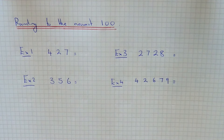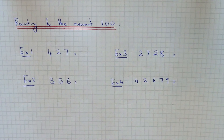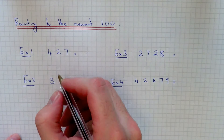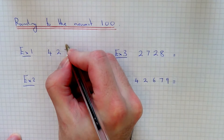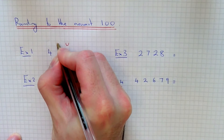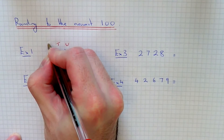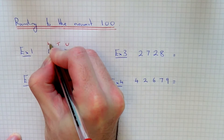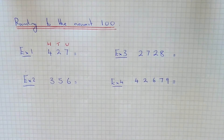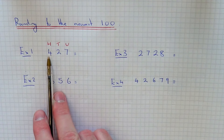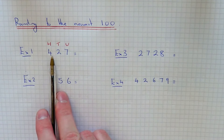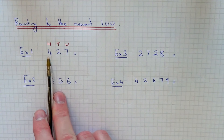So let's have a look at example one. We've got: round 427 to the nearest hundred. To begin with, just label up your columns. So we have 7 units, 2 tens, and 4 hundreds. The column that we're interested in is the hundreds column, and at the moment we have 400.